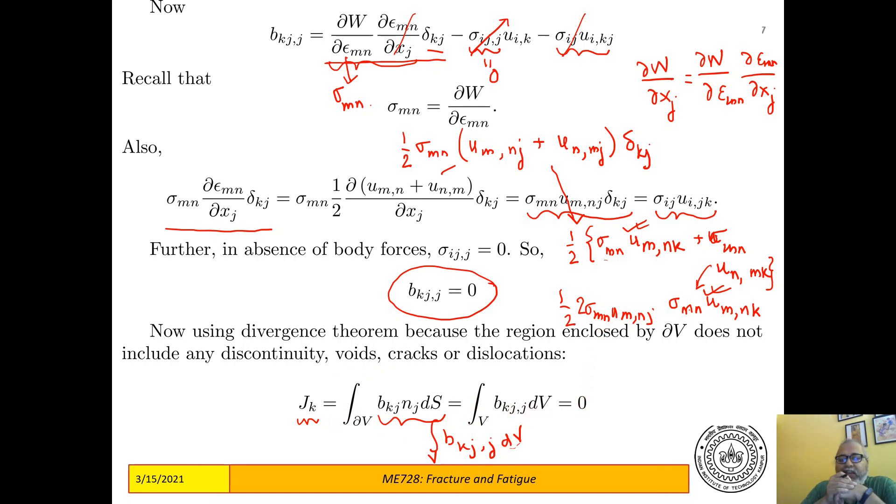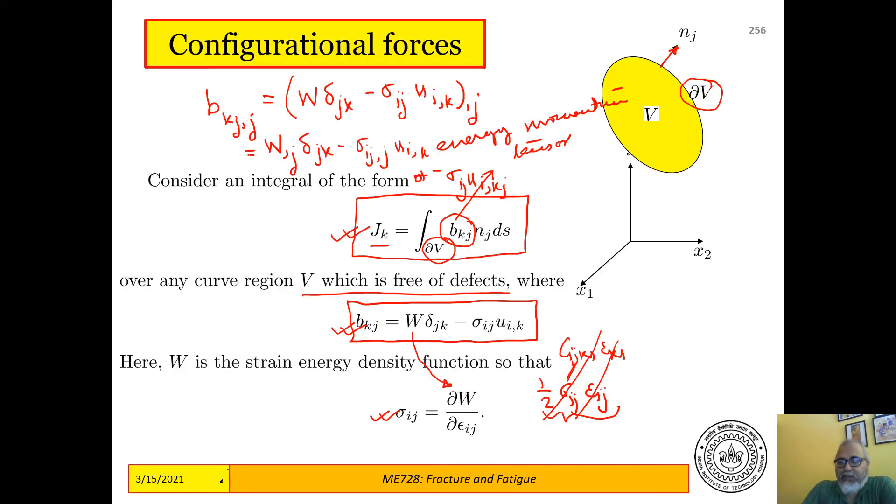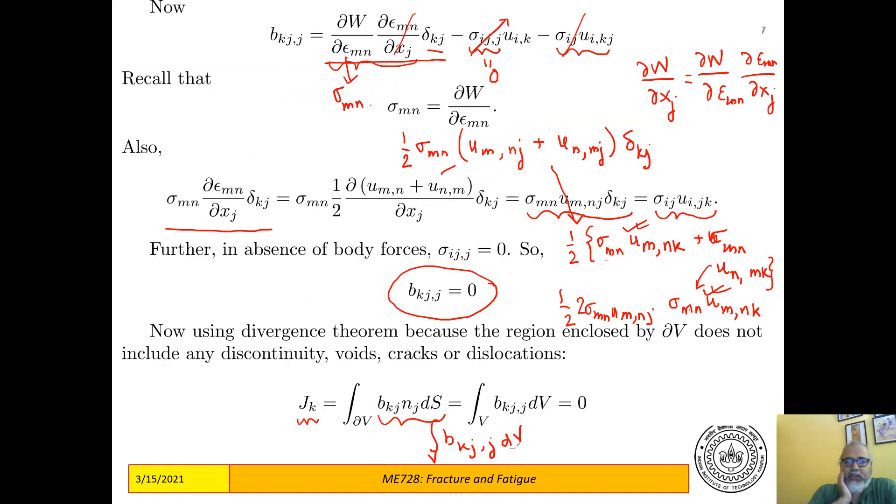So if I enclose a region that does not contain defects, then J_k, which is this contour integral, is equal to zero. That follows from the fact that the divergence is equal to zero as well. So that's what we have proved. And now I will take a couple of problems to explain this concept. In the first problem I will take a region free of discontinuities. In the second case I will take a body which has discontinuities, and I will show it to you that J_k would be different in the two cases.